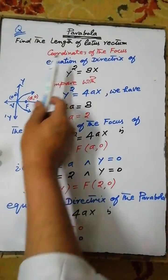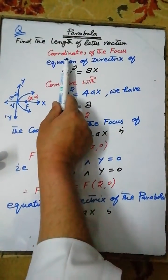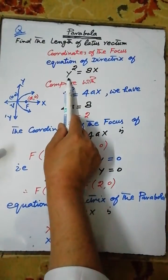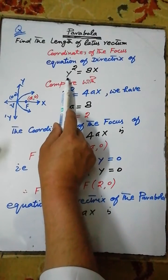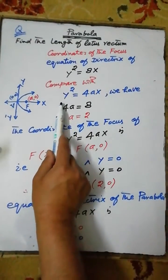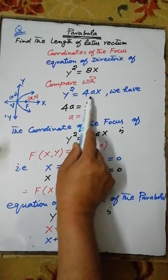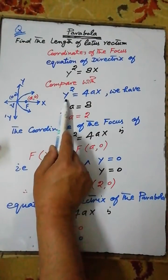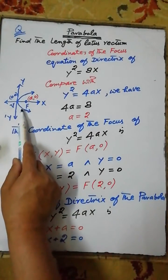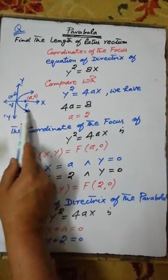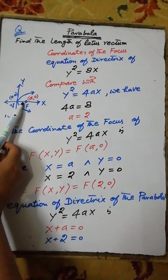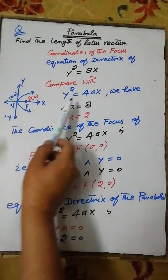Our next question: find the length of latus rectum, coordinate of the focus, and equation of the directrix of the parabola y squared equals 8x. Compare the given equation of the parabola with the general equation y squared equals 4ax. This parabola is the equation of the parabola open toward the positive x-axis, having focus F on the x-axis, with coordinate of the focus at (a, 0) and the vertex at the point (0, 0).